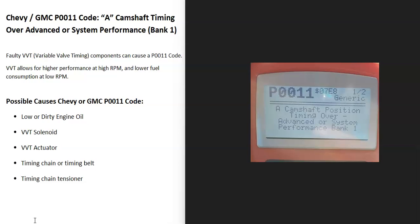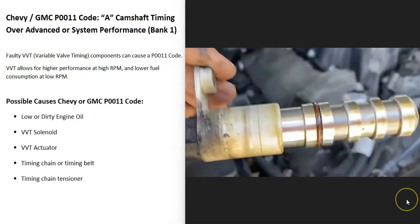There are different components that manage the timing of the engine — sensors, a timing chain or timing belt, and inside newer engines there's a thing called variable valve timing. The variable valve timing helps the engine perform better at higher RPMs and can also help get better fuel mileage. The onboard computer is seeing an error inside of this, so it's going to have to be troubleshot to know why.